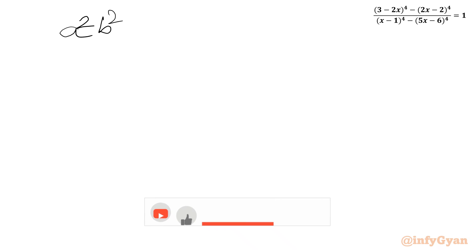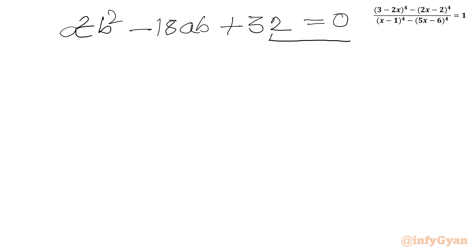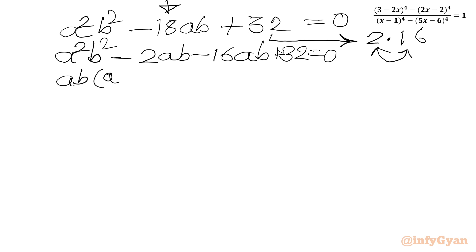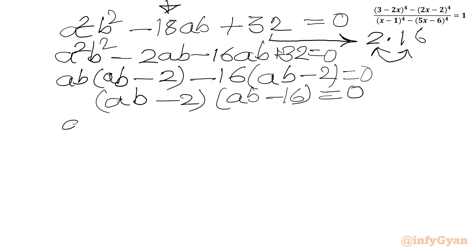The quadratic a^2b^2 minus 18ab plus 32 equal to 0 can be factored. The factors of 32 are 2 times 16, and 2 plus 16 equals 18, matching the middle term. Splitting: a^2b^2 minus 2ab minus 16ab plus 32 equals 0. Taking ab common from the first two terms and minus 16 from the last two: (ab minus 2)(ab minus 16) equal to 0. By the zero product rule, ab equals 2 or ab equals 16.